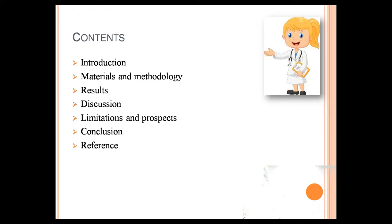Sexual dimorphism refers to the differences in appearance between males and females of the same species, such as in color, shape, size, and structure, that are caused by the inheritance of one or the other sexual pattern in the genetic material. Male and female sexes of the same species exhibit different characteristics.